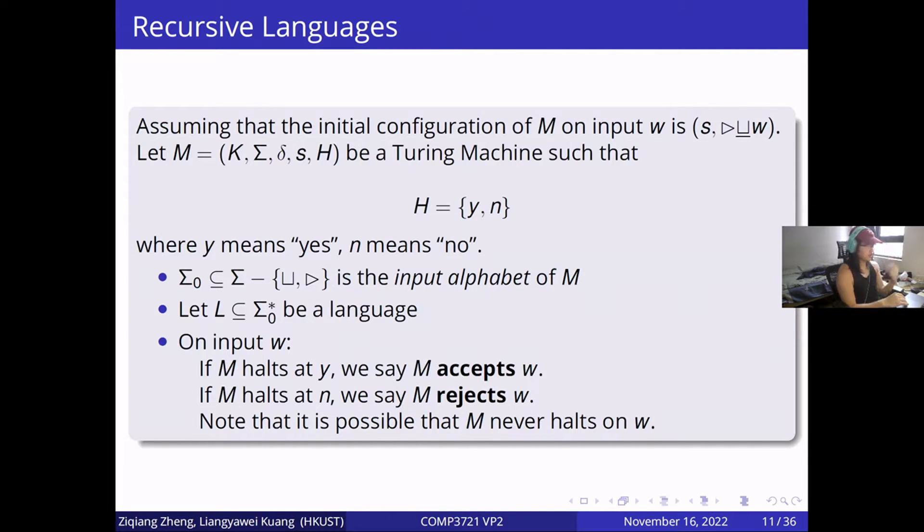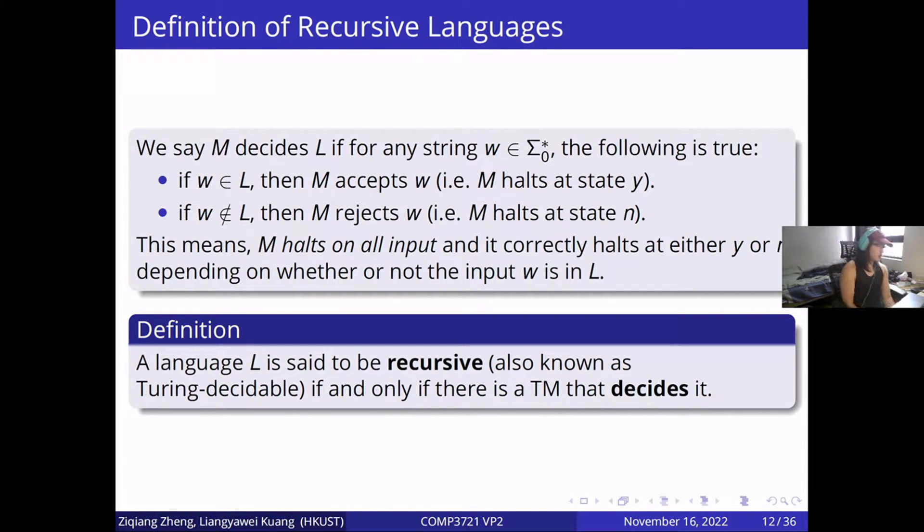Recursive languages are used to decide whether the Turing machines should accept or reject strings, and how Turing machines behave based on inputs. A language L is said to be recursive if and only if there is a Turing machine that decides it. Recursive is also known as Turing decidable.